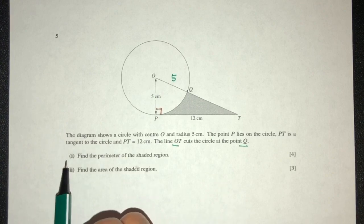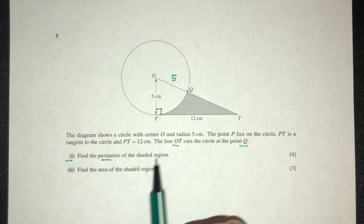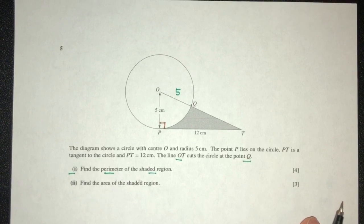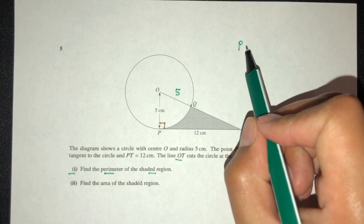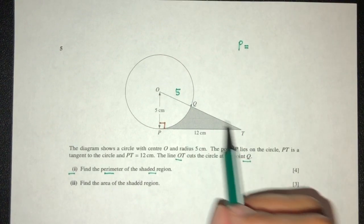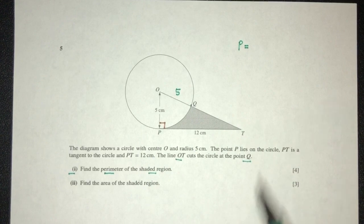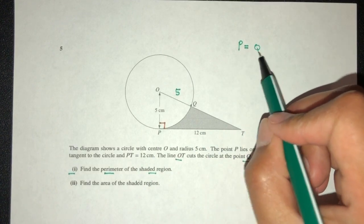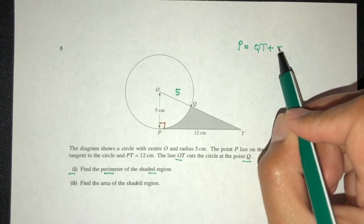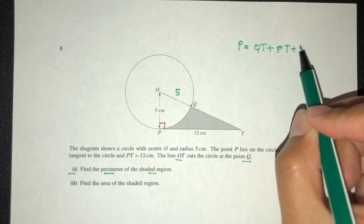Now what else do we need to know? Now part 1, we have to find the perimeter of the shaded region. So step by step we have to find the perimeter, that's the distance around the region. It is defined by Q, T, P, T, and PQ.